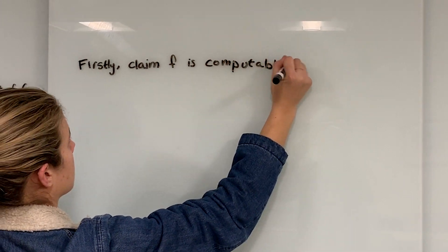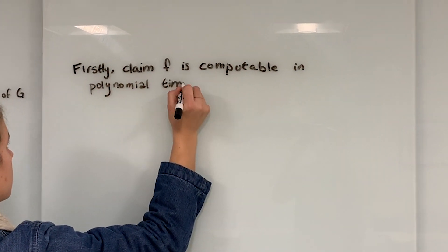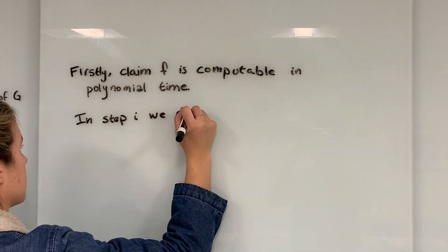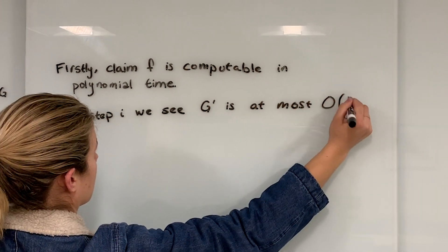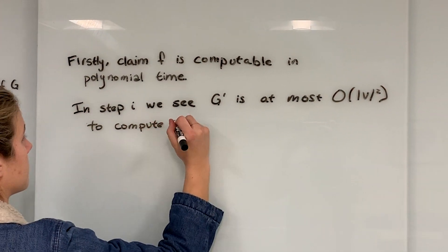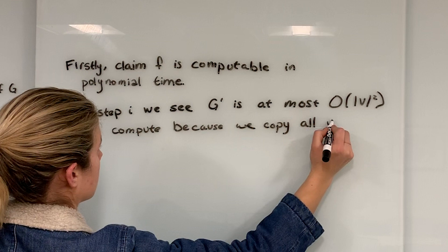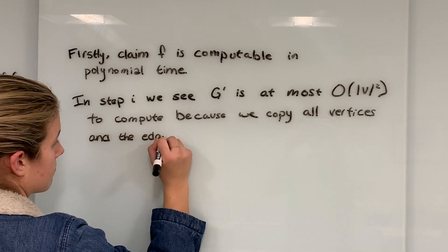We claim that this function f is computable in polynomial time. In step 1, we see G' is at most on the order of V squared to compute, because we copy all the original vertices and all the edges that are not in the original edge set.